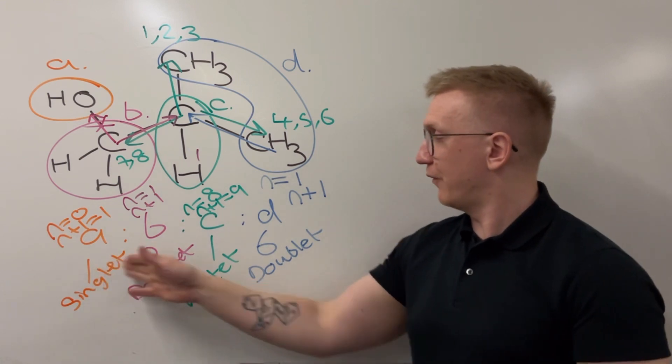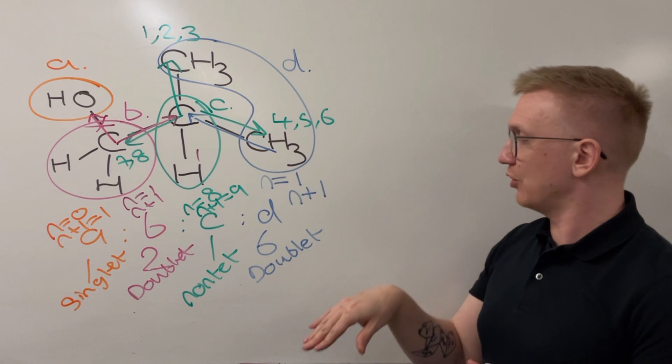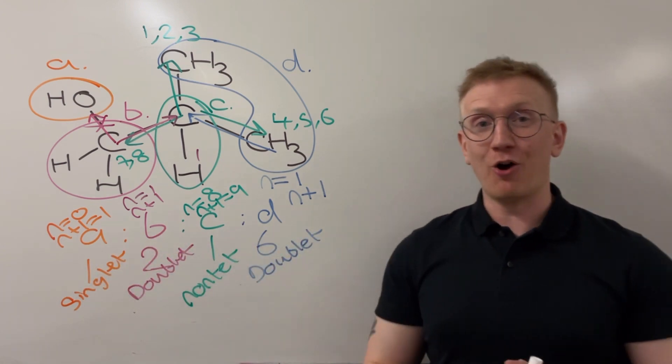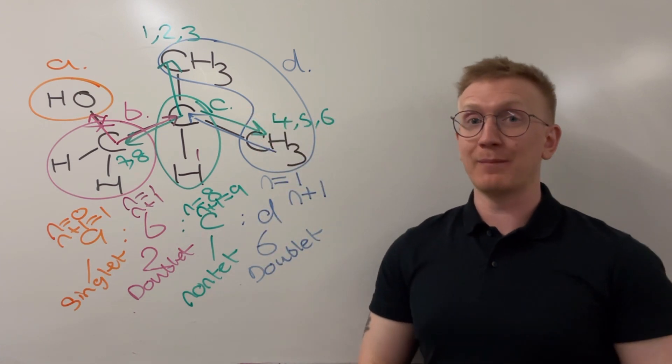And so we can see here our full spectrum of peaks would be a singlet, a doublet, a nontet, and a doublet again, in the ratio of one to two to one to six all the way through here. And that's how we would predict what peaks we would get for this particular molecule.